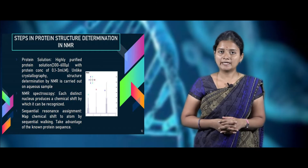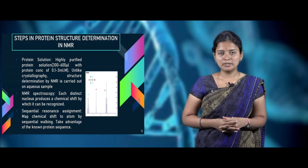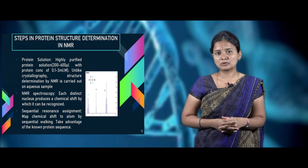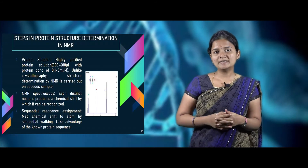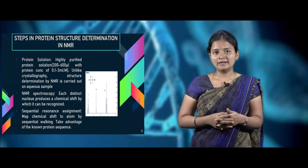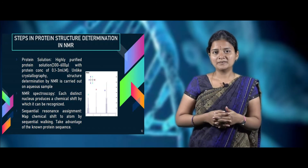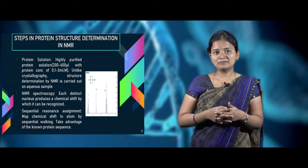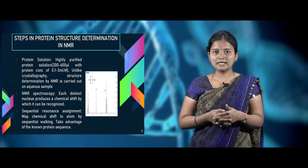For protein structural determination using NMR, the first step is to obtain a purified sample at a concentration of 0.1 to 23 millimolar. Unlike X-ray crystallography, NMR spectroscopy is carried out using aqueous solution, with the purified sample dissolved in a buffer solution. The sample is then placed in the NMR instrument where a distant nuclear pattern is produced with the help of chemical shifting, which is then mapped to atoms by means of sequential walking.